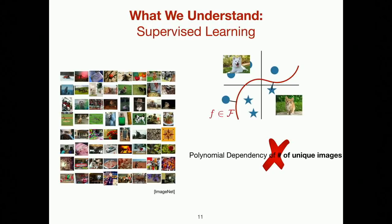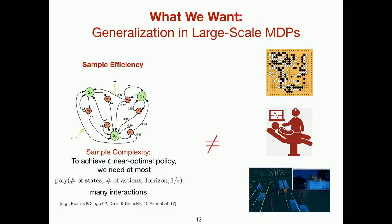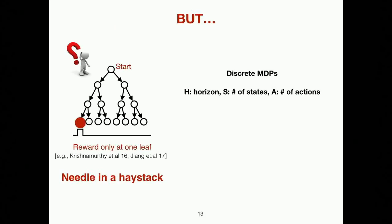So what can we do? Let's look back to supervised learning, something we understand well in both theory and practice. We have training data, fit a model, and make predictions — there's no polynomial dependency on the number of unique images in the world. We can achieve generalization via rich function approximation. We'd like to do the same thing for large-scale MDPs: bridge the gap between small discrete MDPs and real-world problems by using rich function approximation techniques, so that we can generalize across states we've never seen before.